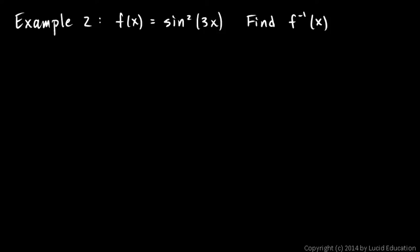Example 2: f of x is equal to sine squared of 3x, find f inverse. We'll apply again our very straightforward technique. Rewrite this, but instead of saying f of x is equal to this, say y equals this. Y equals sine squared 3x. And then switch x and y. So I get x equals sine squared 3y. And then I have to solve this for y.